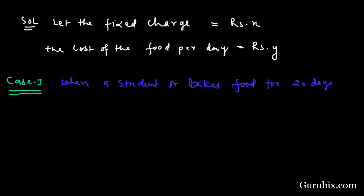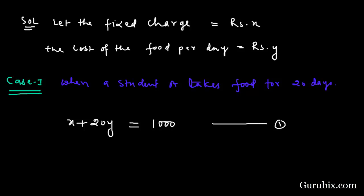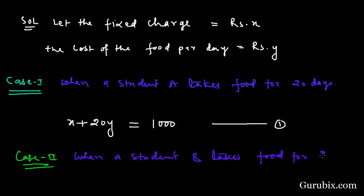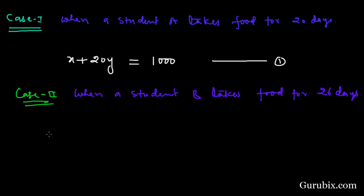According to case 1, the equation will be X plus 20Y equals to 1000, because Y is the cost of food per day and student A takes food for 20 days, so we multiply by 20 and add the fixed charges. This is equation number 1. For case 2, when student B takes food for 26 days, the equation will be X plus 26Y equals to 1180. This is equation number 2.